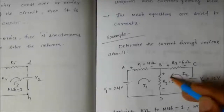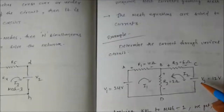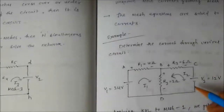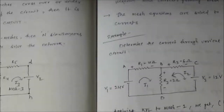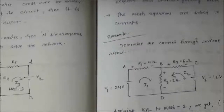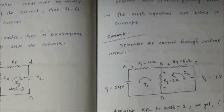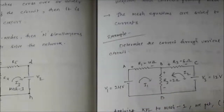When a current value comes out negative, it means the actual direction is opposite to the assumed direction. We assumed i2 flows clockwise, but the negative result means it actually flows anti-clockwise. Whenever a current becomes negative, simply reverse the direction: if clockwise, make it anti-clockwise, and vice versa. For three-mesh problems, three equations with i1, i2, i3 are formed and solved using the scientific calculator.